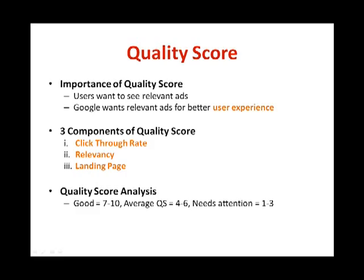Relevancy is the second largest component of quality score, determined by the relevancy of your keywords, ads, and the user's search query. Finally, the last component is landing page — your ad is only useful if the landing page you lead users to helps them find the information they were looking for. It should be user-friendly, easy to navigate, quick to load, and have relevant information. A good quality score is between 7 to 10, average is 4 to 6, and one that needs attention is 1 to 3. If your quality score is 1, your ad won't even be shown.